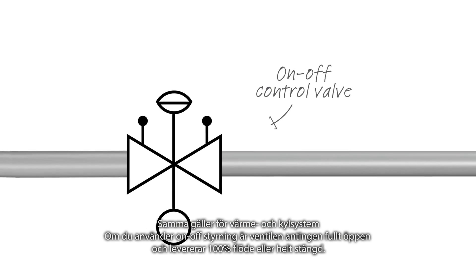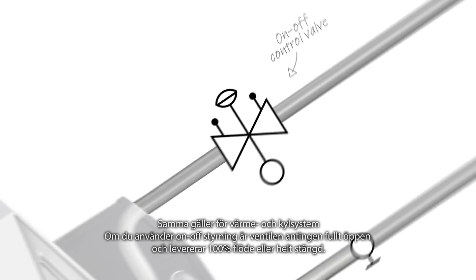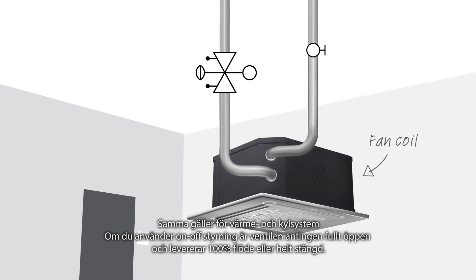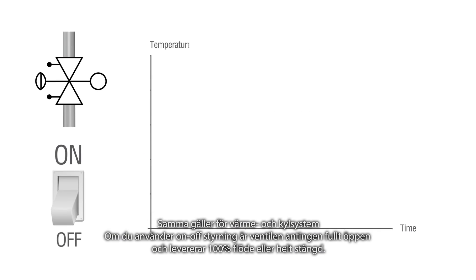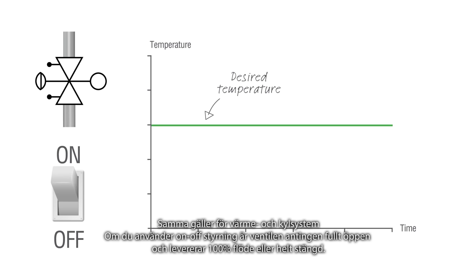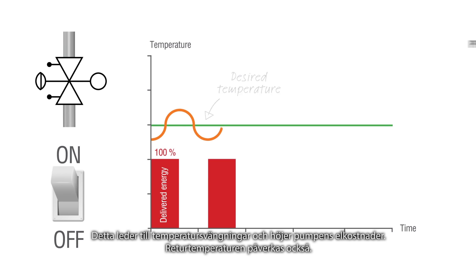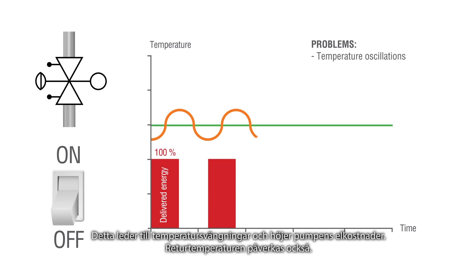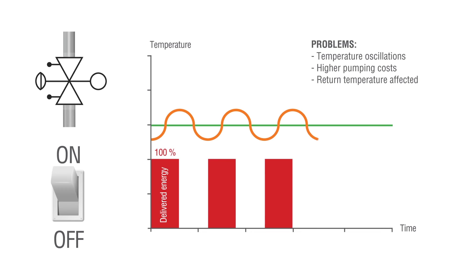Similarly in heating and cooling systems, if you use on-off control the valve is either fully open and delivers 100% flow or fully shut. This leads to temperature oscillations and higher pumping costs, and the return temperature is also affected.